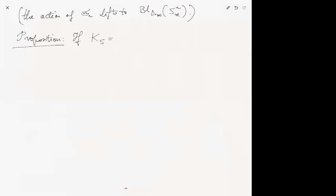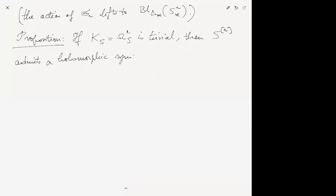Proposition: If K_S = Ω²_S is trivial, then S^[r] — the Hilbert scheme — admits a holomorphic symplectic form.